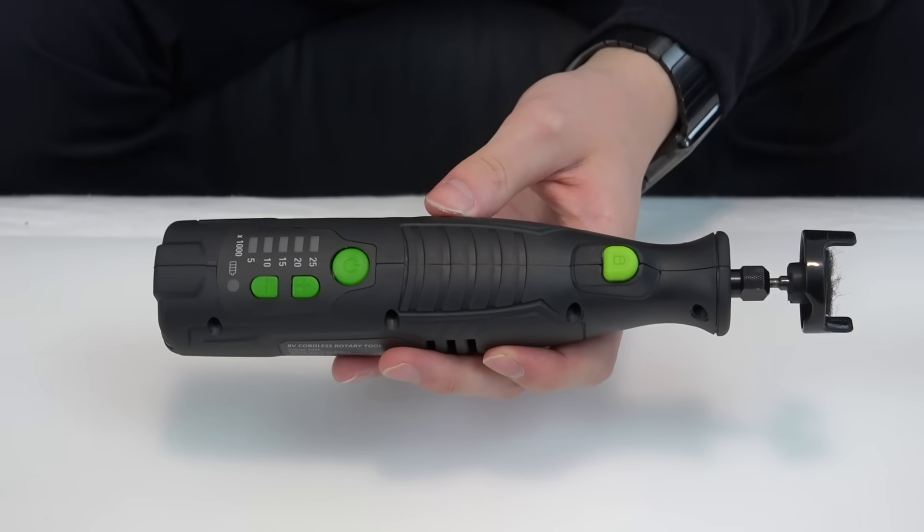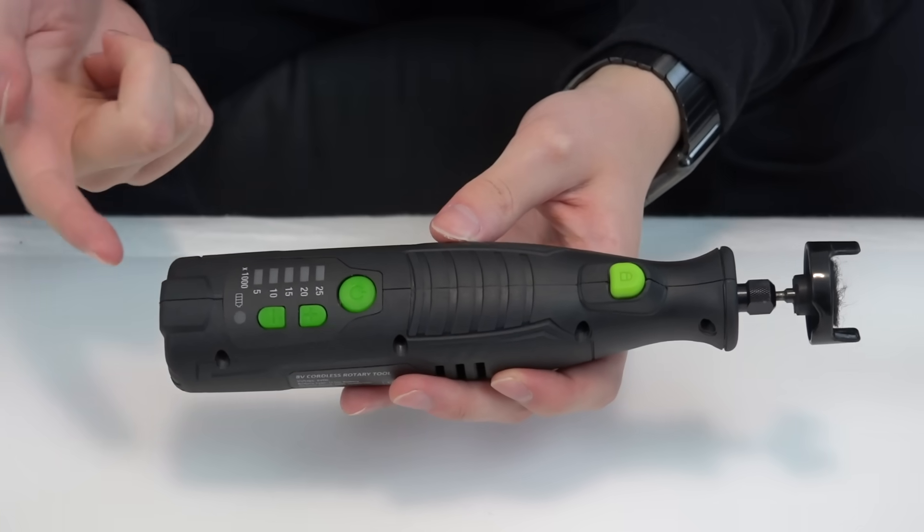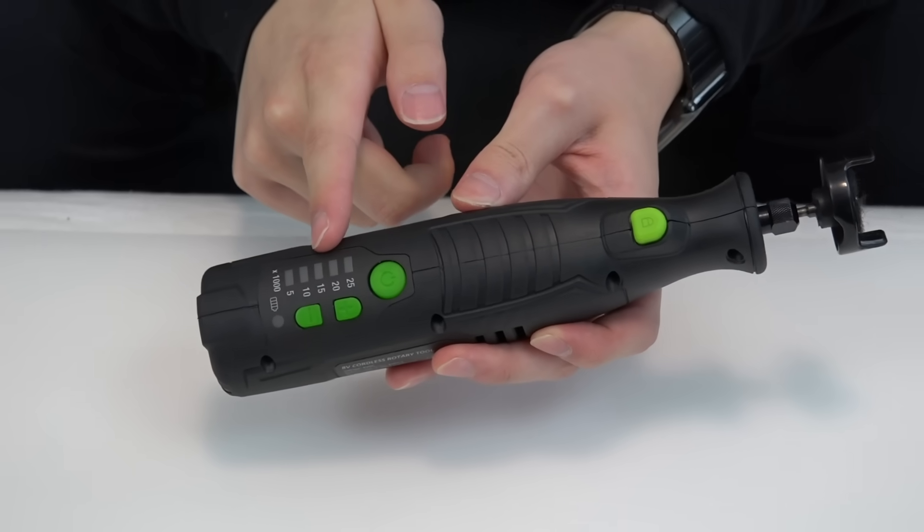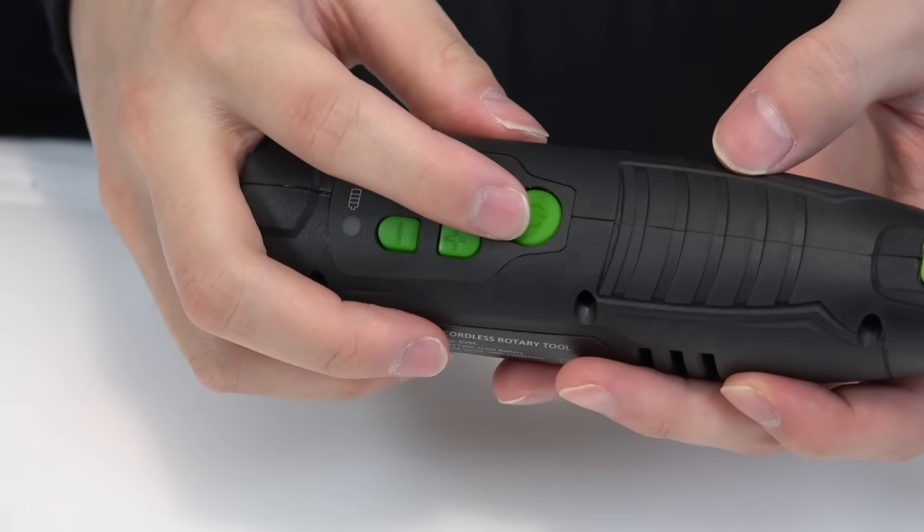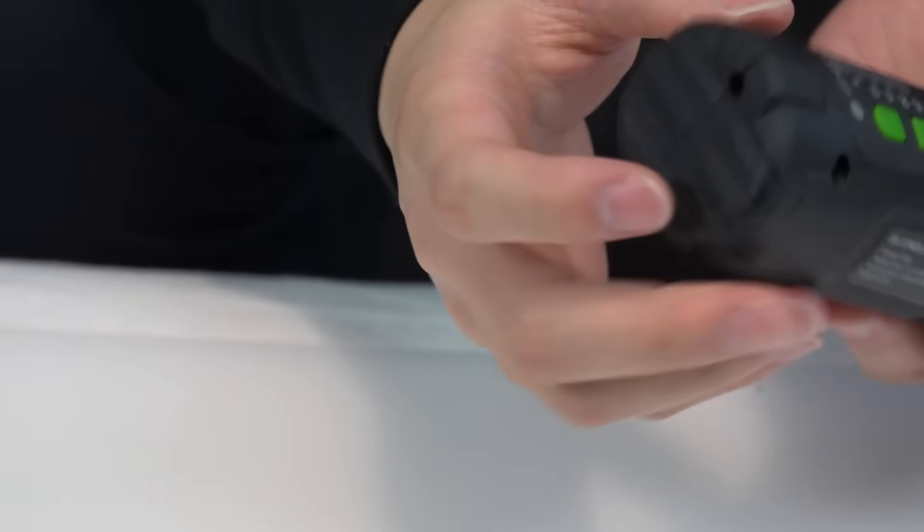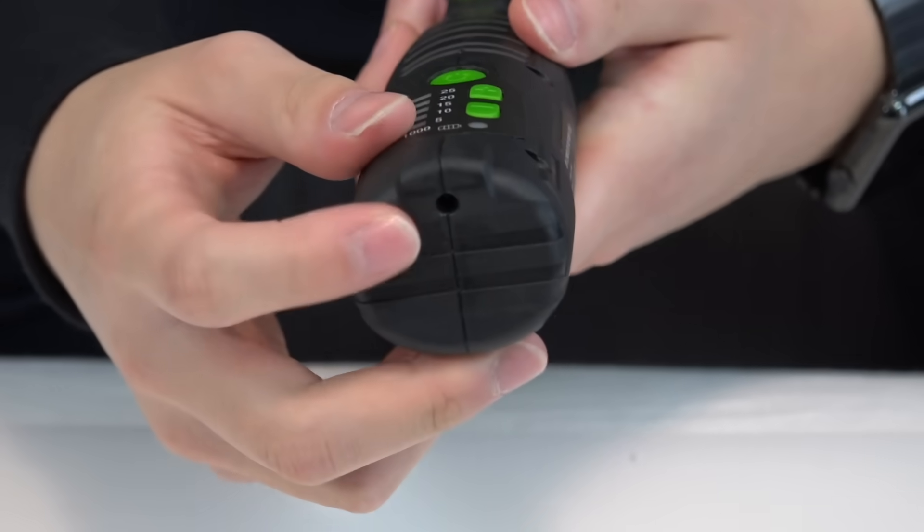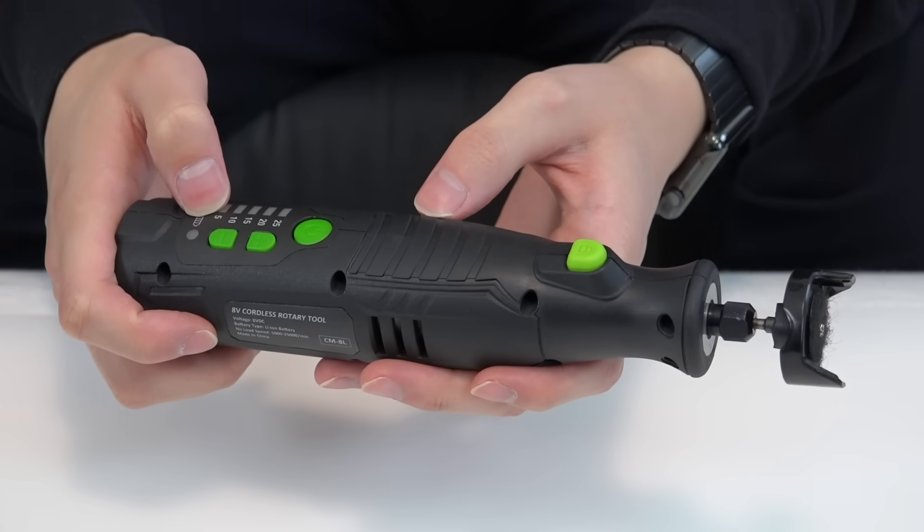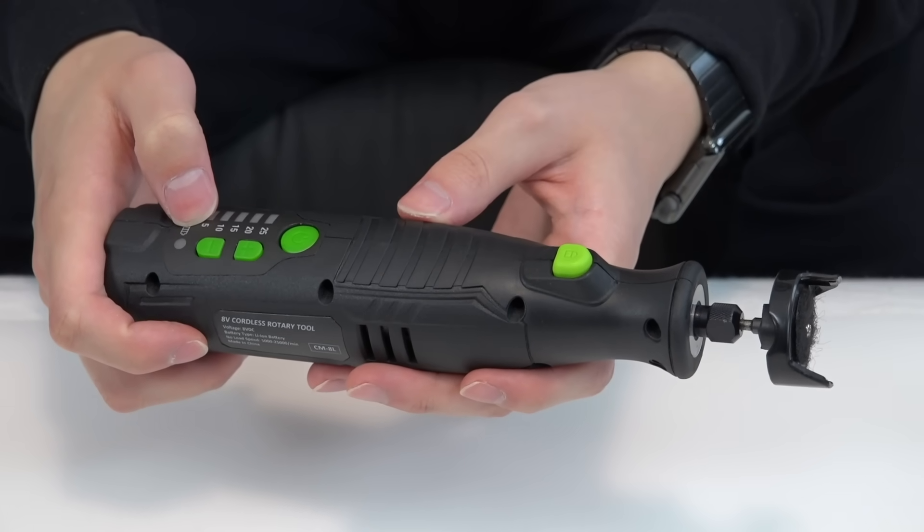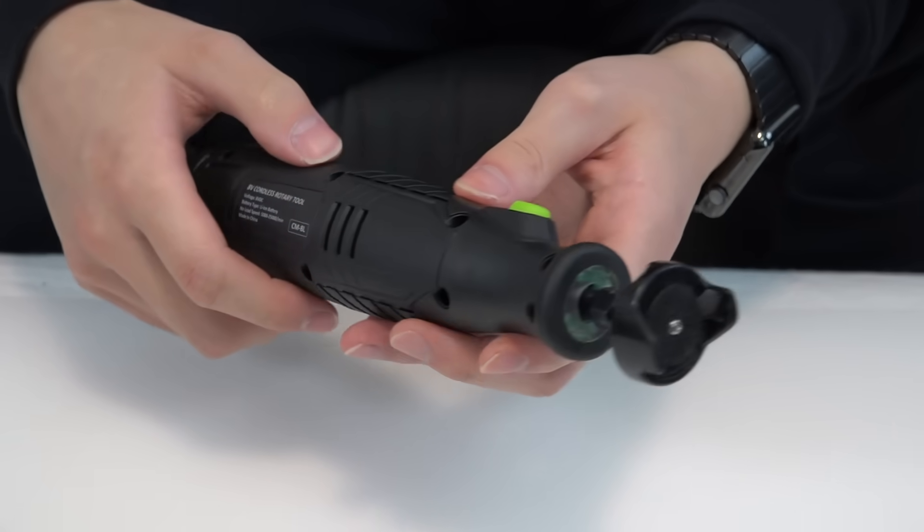But yeah, this one has got a couple of different features. So you can increase or decrease your RPM, right? We also have a power button to turn on or off. And then on the back, we got the charging port. So you know, never run out of power. Even in the wild, you know, in the wilderness, you can beyblade with the rotary tool all you want.